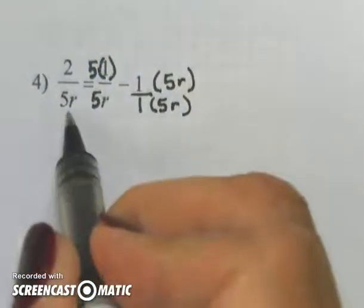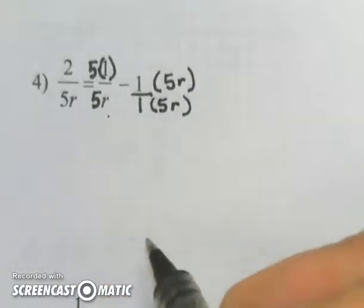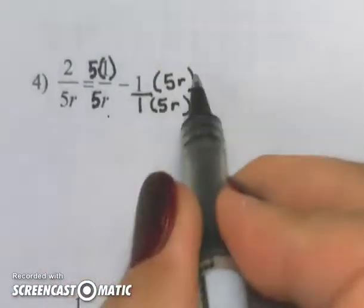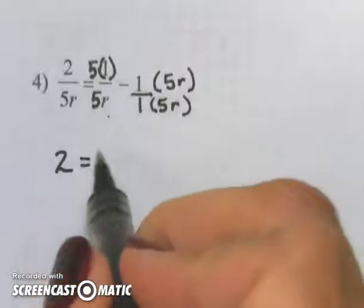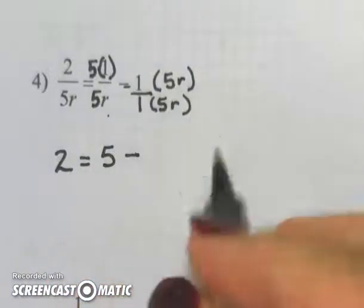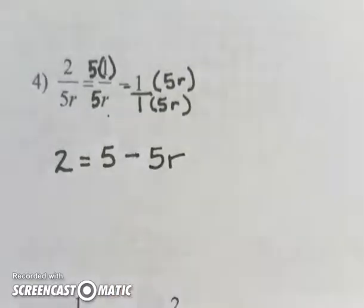Since I have 5r, 5r, and 5r as my denominators, I will now not worry about my denominator and merely look at the numerator. So 2 equals 5 times 1 minus 1 times 5r, and I need to solve my problem.